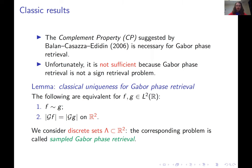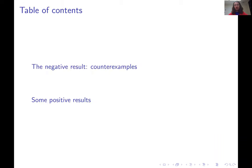Now we know why we should care, we know what Gabor phase retrieval is, and we know a little bit about what is classically known about uniqueness. I want to now take you into the main part of my talk. I split this up into two parts. The first one I call the negative results — counterexamples. A negative result for me is a situation in which we can prove that we cannot do phase retrieval.